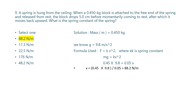Question number 9. A 0.450 kilogram block is attached to the free end of a spring and released from rest. The block drops 5 centimeters from momentary rest, after which it moves back upward. What is the spring constant of the spring?